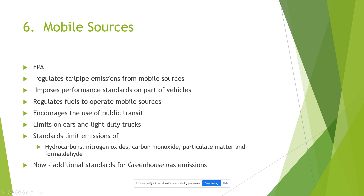Next under the Clean Air Act is mobile sources. We've dealt with stationary sources under the SIPs; now mobile sources — cars and trucks. The EPA under the Clean Air Act can regulate tailpipe emissions from trucks and cars, impose performance standards on vehicles, and regulate the fuel. We no longer have leaded gasoline — that is a regulation of the EPA under the Clean Air Act.